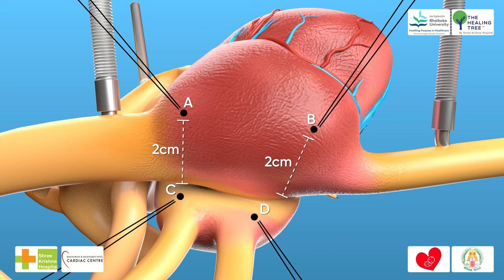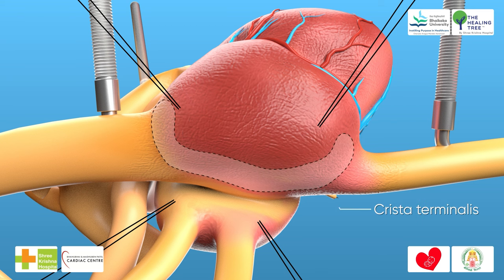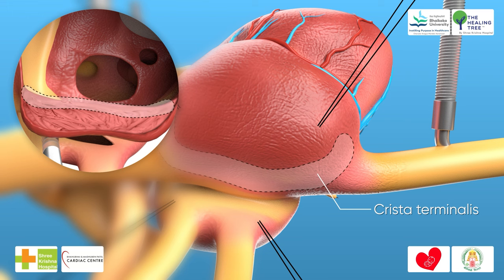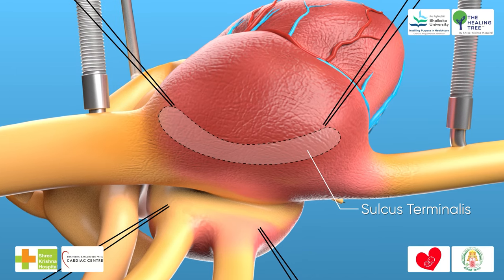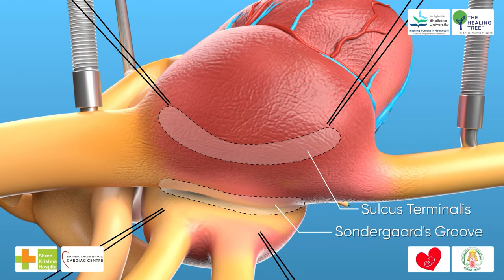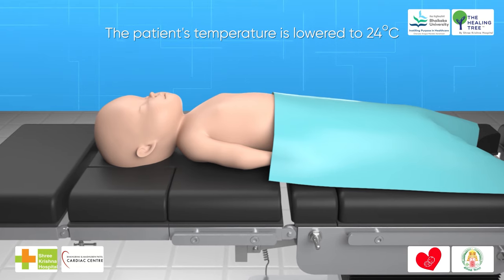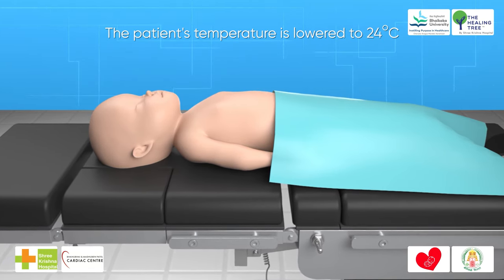Marking sutures are placed on the interatrial groove to define the cephalic point C and caudal point D, defining the extent of the left atriotomy. A marking 6-0 Prolene suture at point B is placed cephalad from the junction of the IVC and the right atrium at a minimal distance of 15 mm, or equal to two-thirds of the IVC circumference, defining the inferior extent of the right atrial incision. While the patient's temperature is lowered to 24°C, ligatures are placed around each vena cava for later occlusion.